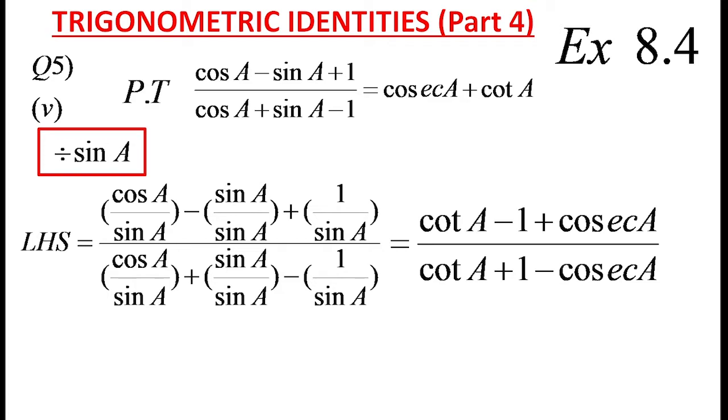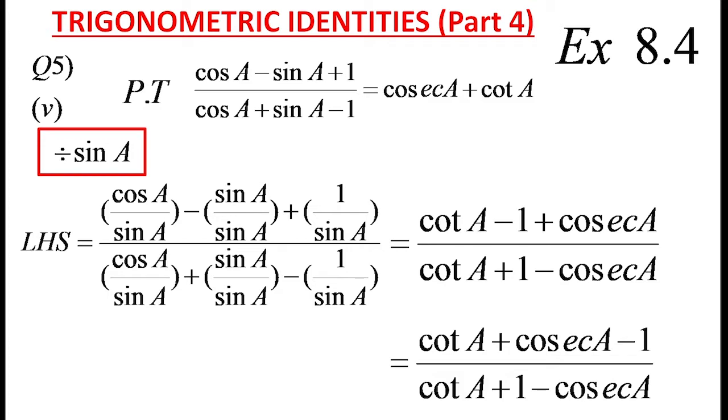Now I am going to rearrange the numerator as cot A plus cosec A minus 1 divided by cot A plus 1 minus cosec A.